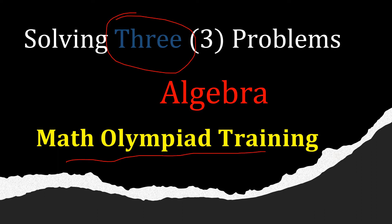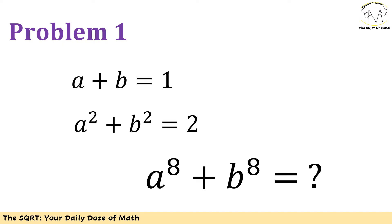Let's start with the first problem. We have a plus b equals to 1, a squared plus b squared equals to 2, and we are going to find a to the power of 8 plus b to the power of 8.